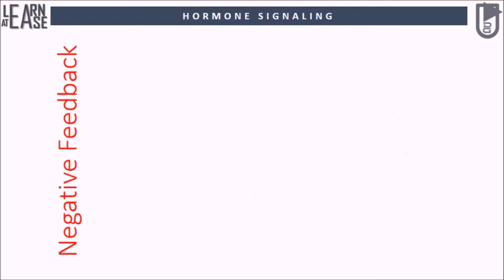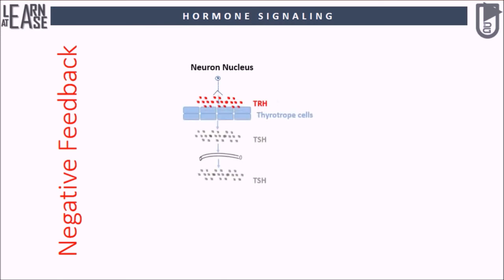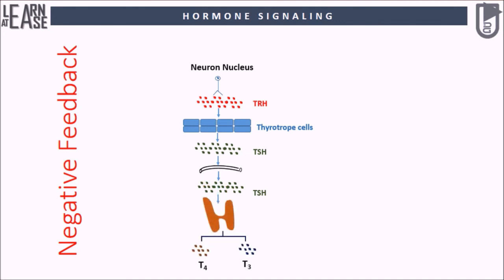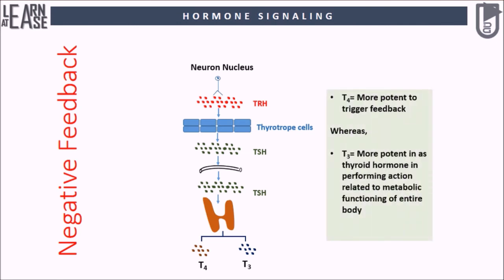The amount of T3 and T4 produced is highly regulated by feedback inhibition. TRH and TSH are produced by the neuron nucleus and thyrotrope cells respectively, and these molecules must be regulated to control the activity of the thyroid gland. T4 is more potent in triggering feedback inhibition, whereas T3 is more potent as a thyroid hormone in performing actions related to metabolic functioning. Overproduction of T4 will inhibit TRH and TSH production, slowing down the activity of the thyroid gland — this mechanism is called negative feedback.